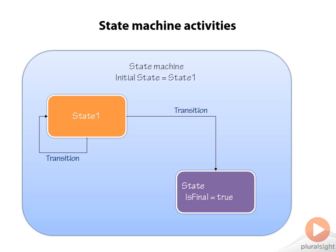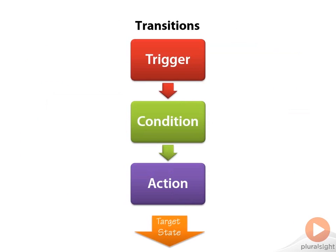Each of these states has, as you would expect from good state machines, an entry and exit action. This is a spot for you to put activities to execute when you enter or exit the state. The final state, however, only has an entry action. This makes sense because we don't ever exit that state — we end the state machine. We also have transitions to define moving from one state to another, or even from one state to itself. These transitions are made up of a trigger, a condition and action, and they point to some target state.